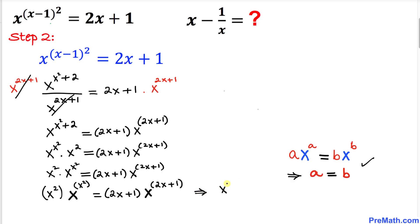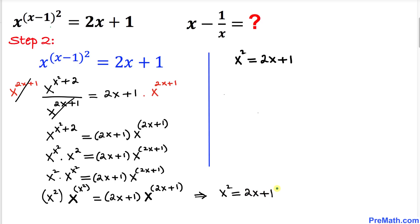Since we are running out of space I've copied this down: x squared equals 2x plus 1. Let's move the 1 to the left side, giving us x squared minus 1 equals 2x. Now go ahead and divide both sides by x.